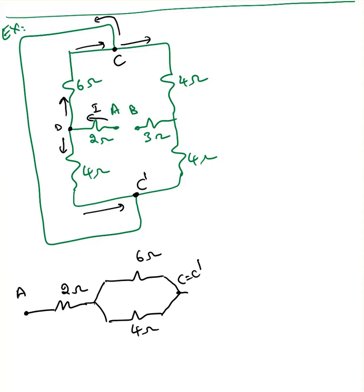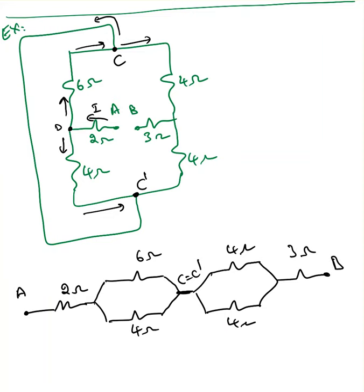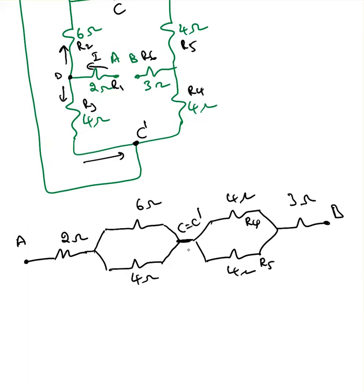Extending the diagram a little so you can clearly see: from C you have 4 ohms, from C prime another 4 ohms. Then the last element is 3 ohms going to B. I always recommend putting the numbers so you don't get confused. There are six elements total — this is R4 and R5. I drew an extra line but in reality these two points are together. Now I can clearly see: 6 parallel with 4, which is 2.4 ohms.